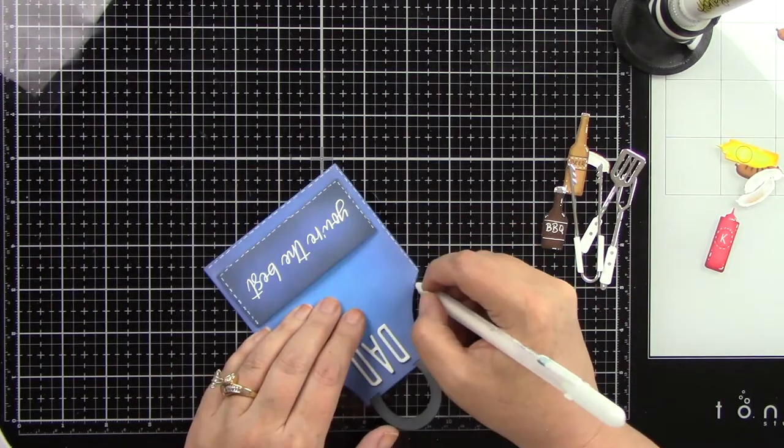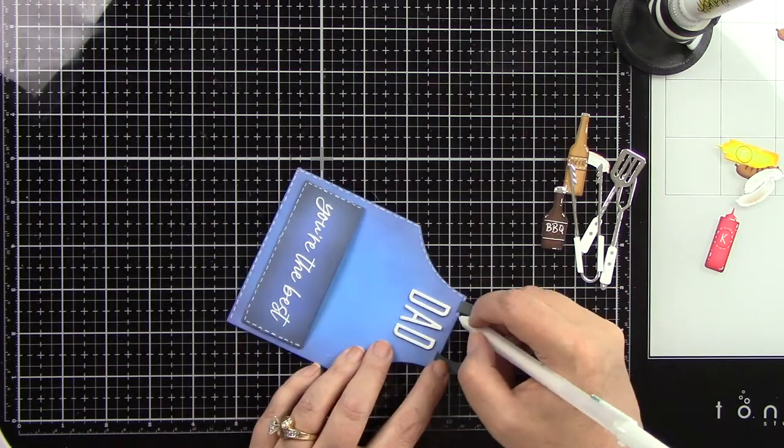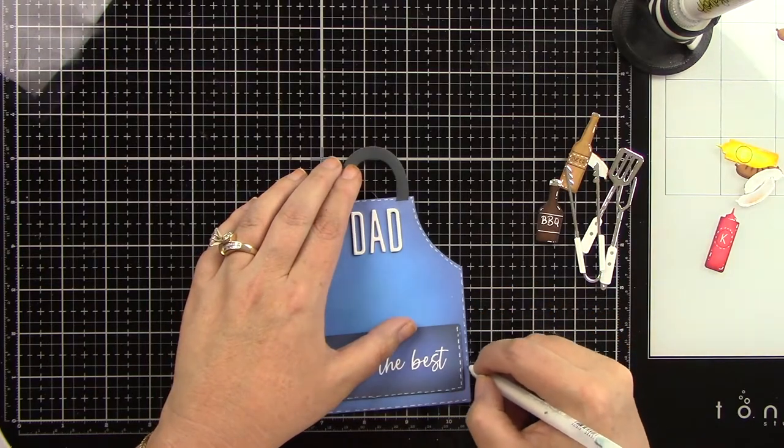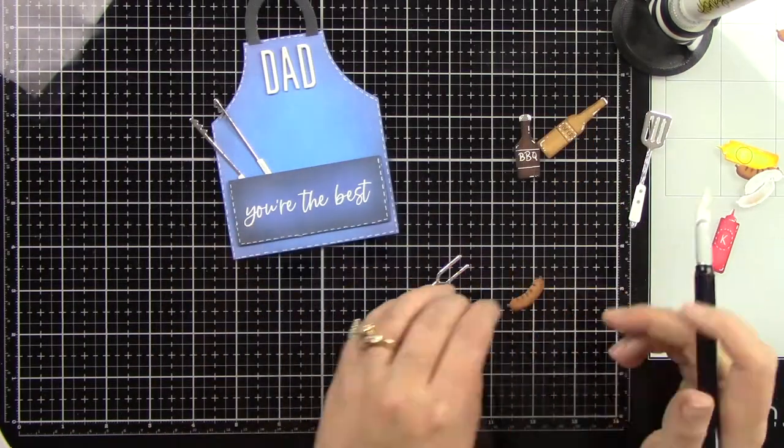I'm just taking my white gel pen, adding little dashes with a little space in between, and then you've got this really cute stitching line. If you had a red pen, that would be super cute too.